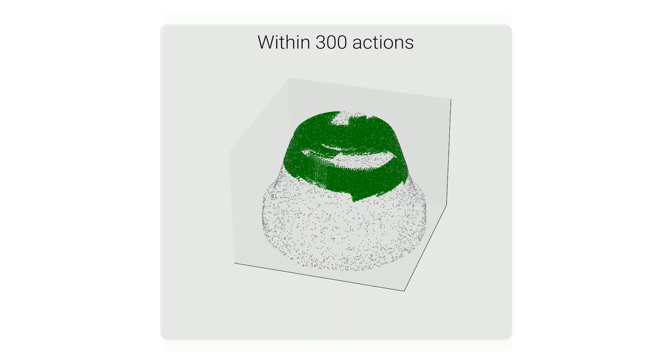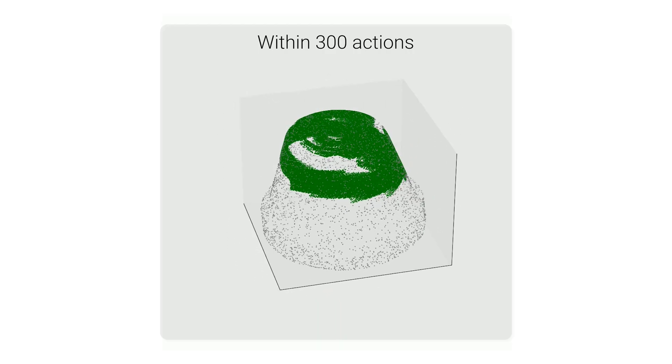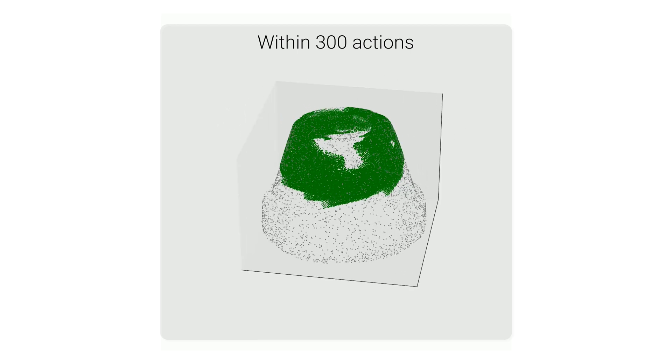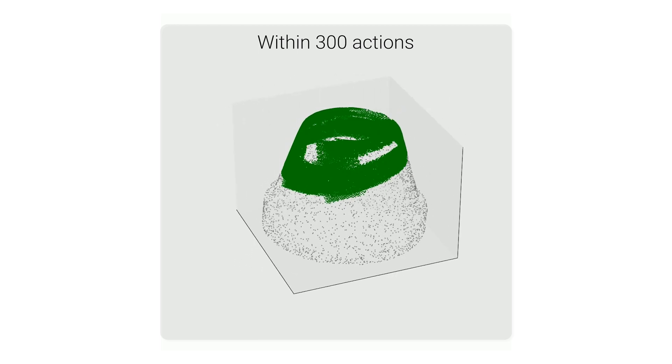We can use the trajectory generated by running the policy for 300 actions, where each action corresponds to either a translation of 4mm or a rotation of 15 degrees in the sensor's frame.